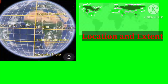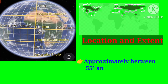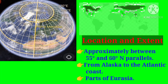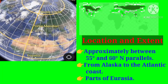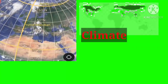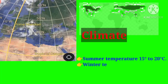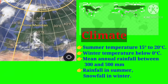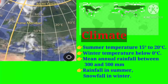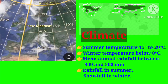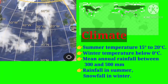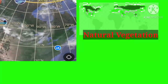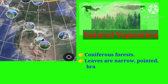The second region is the taiga region. Its location and extent is approximately between 55° and 65° northern parallels, from Alaska to the Atlantic coast, and parts of Eurasia. Climate in the taiga region: summer temperature is between 15°C to 20°C, winter temperature is below 0°C, and the mean annual rainfall is between 300 and 500 mm. Rainfall occurs in summer and snowfall in winter.